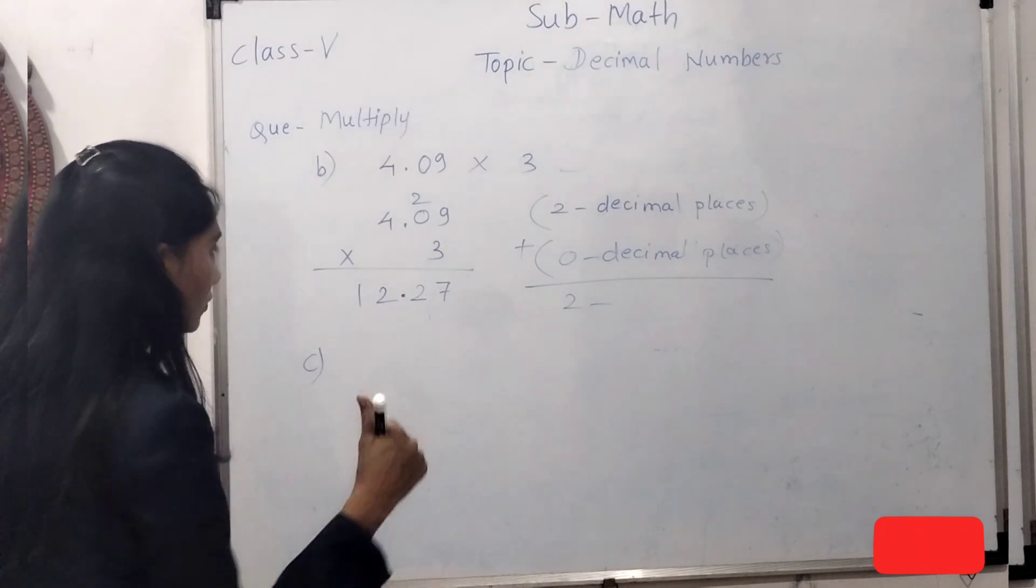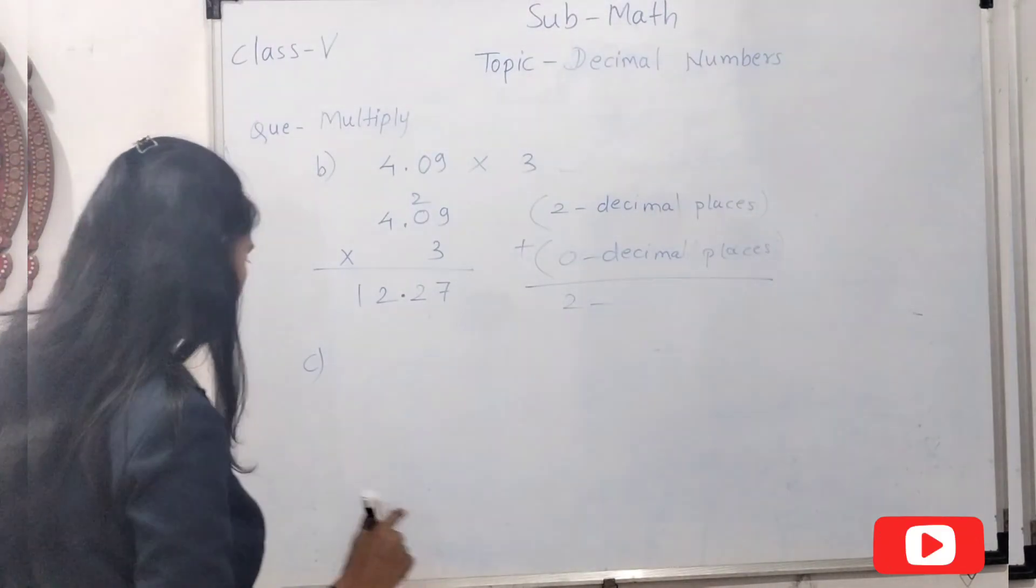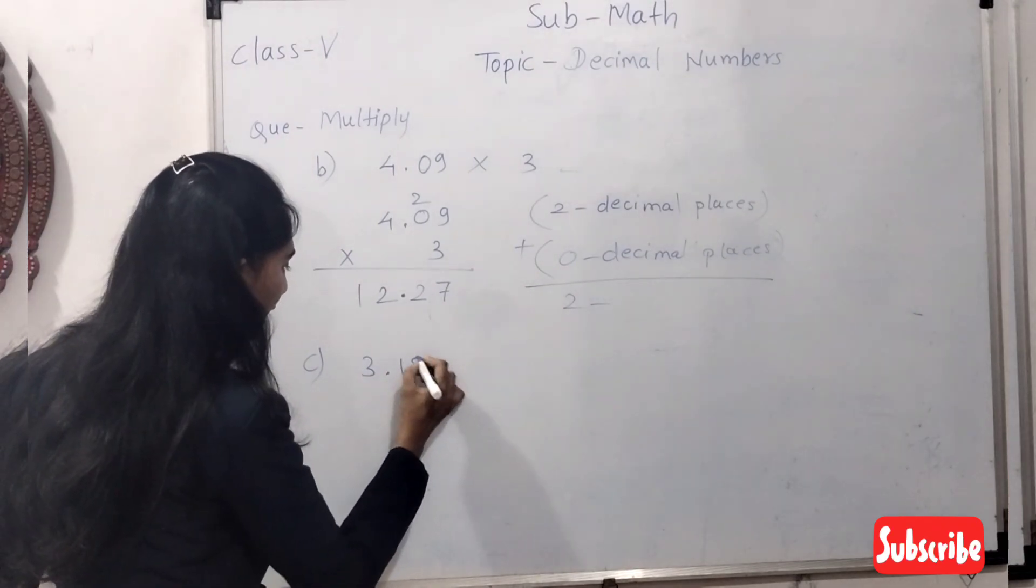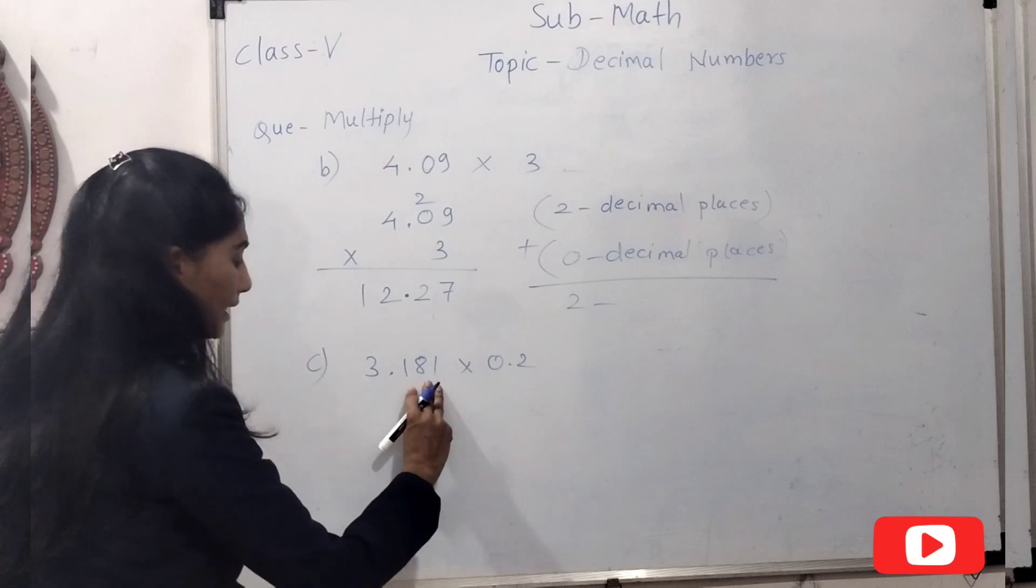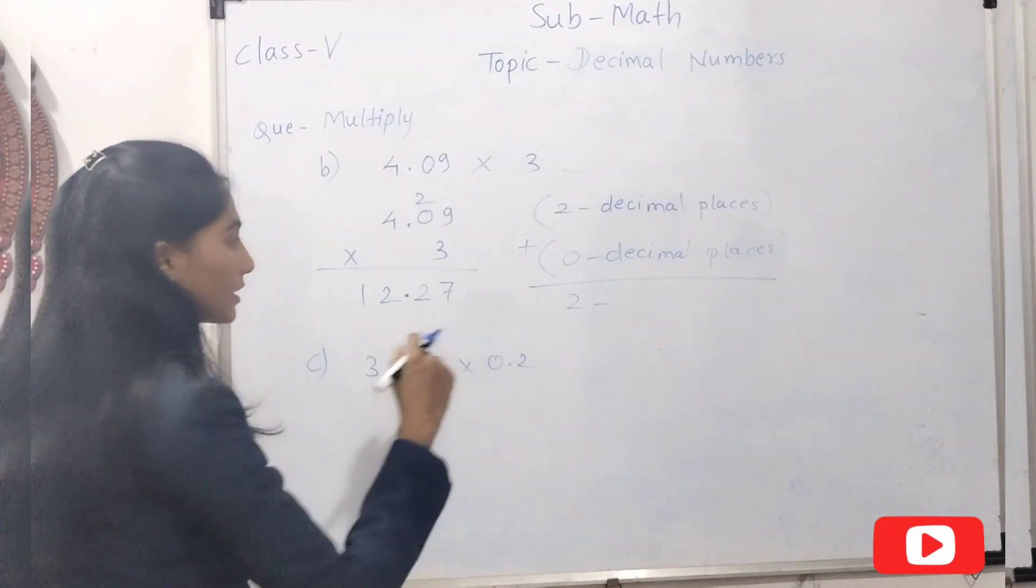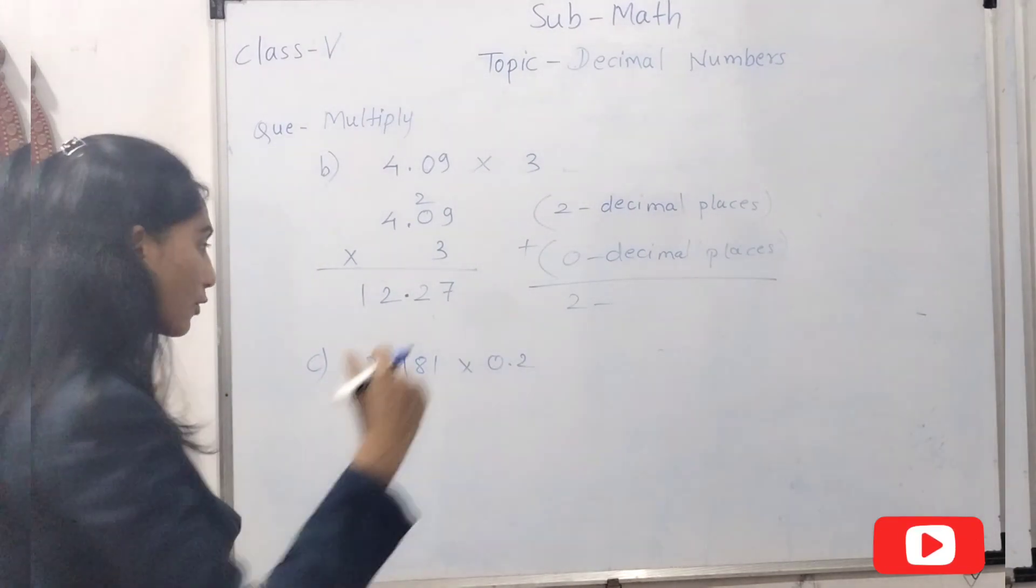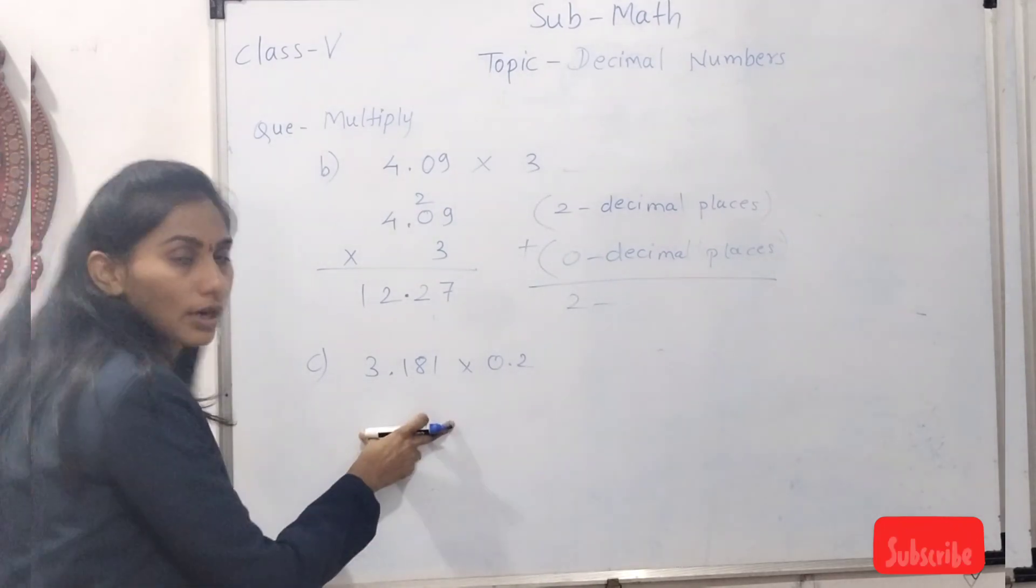Now some examples I am going to give you for your practice. So you can write answer in the comment section. 3.181 by 0.2, so you will count 3 decimal places plus 1 means 4 decimal places. From right side you need to count in the product and then you have to put the decimal point.